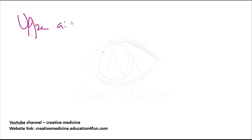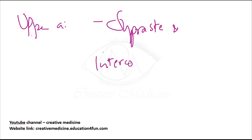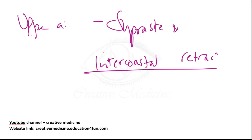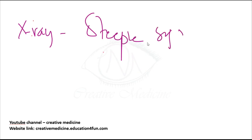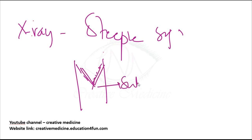Because it is an upper airway obstruction, you will see suprasternal and intercostal retractions. On X-ray, you will see the steeple sign, which shows a funnel-shaped narrowing of the subglottic area.